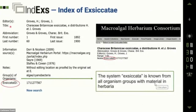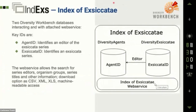Index Exsiccatae is an online database with bibliographic information on exsiccatae and exsiccatae-like series, started in 2001. It gives you editors, title, abbreviation, first and last issue dates, organism group, and the exsiccatae ID — a stable and persistent identifier. The system covers all organism groups with material in herbaria. Index uses two components of the Diversity Workbench: Diversity Agents, which identifies the editor, and Diversity Exsiccatae, which identifies the series. The web service allows searching by series, editors, organism groups, and can be downloaded in CSV, XML, and XLS.